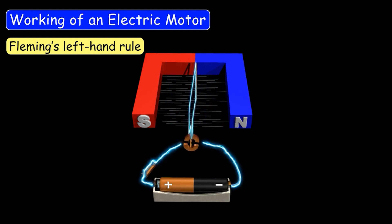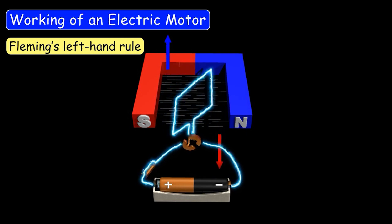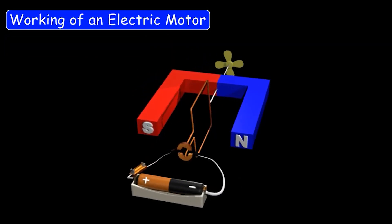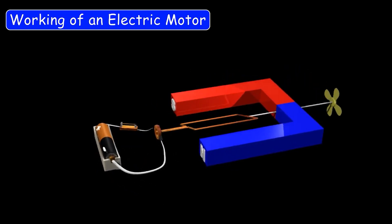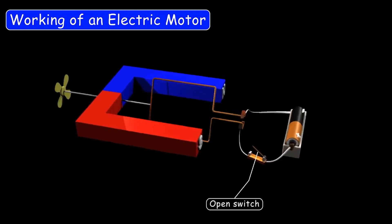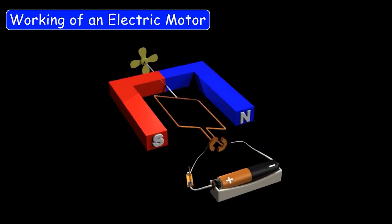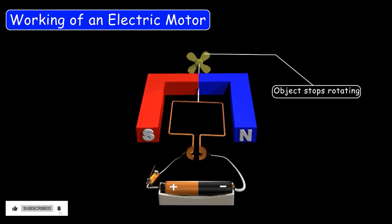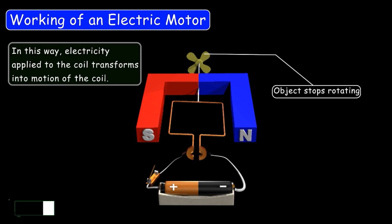The electromagnet keeps rotating as long as the circuit remains closed, as in, as long as current flows through the coil. The object connected to the electromagnet — for example, the fan blades of a toy airplane — keeps rotating until the circuit breaks. When the circuit is open, no current flows, the motor stops working because the coil is no longer an electromagnet, and the object stops rotating. In this way, electricity applied to the coil transforms into motion of the coil.